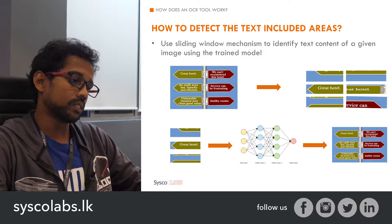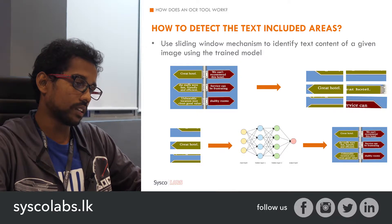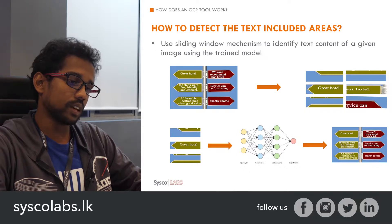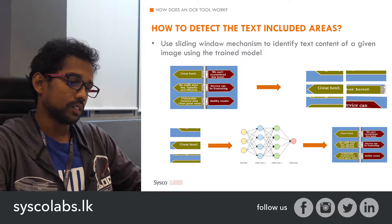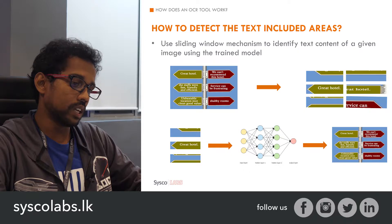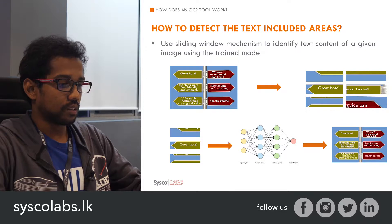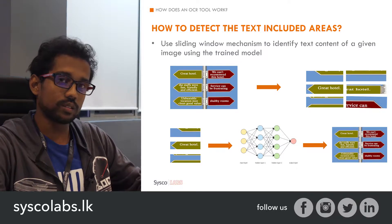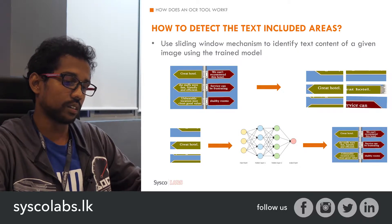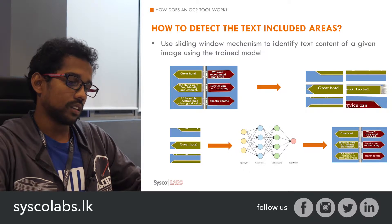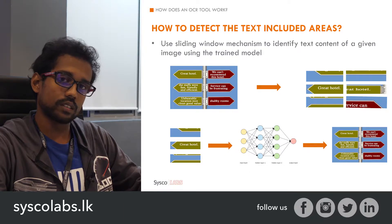We can achieve this using a mechanism called sliding window. In the sliding window mechanism, we have a fixed window that we slide throughout the image horizontally and vertically, creating small sub-images. We scan the whole image with the fixed-size window and feed these small images to our trained model. It predicts whether each contains textual content or not. By aggregating those results, we can identify the areas which contain the actual textual content.